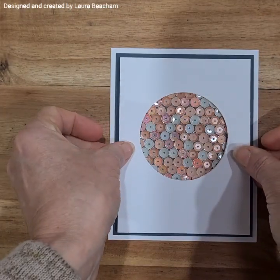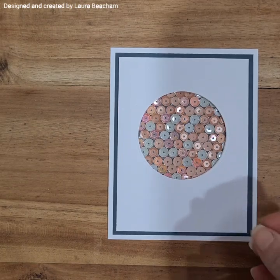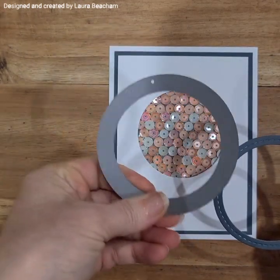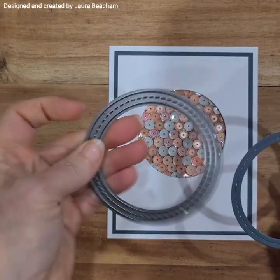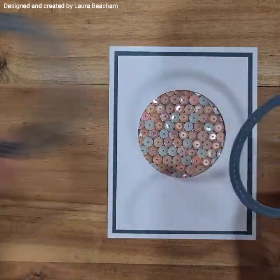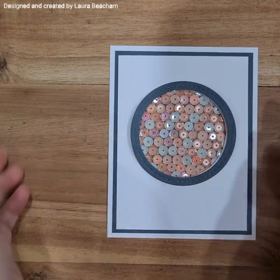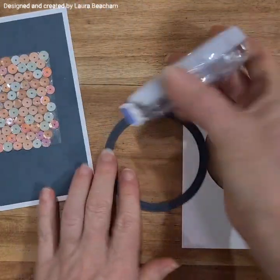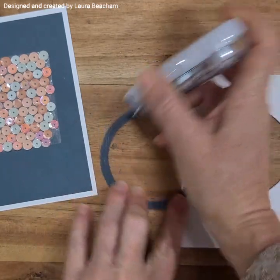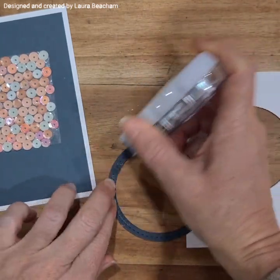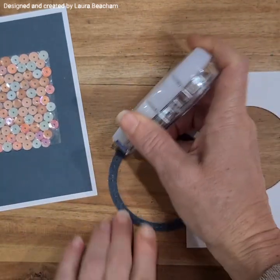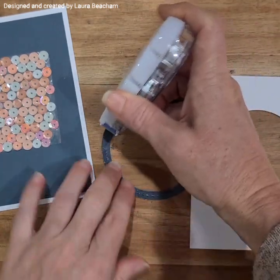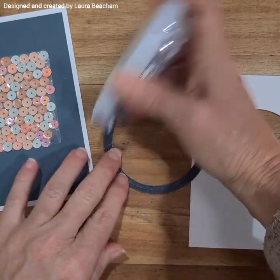Then that fits over the top. I've taken the Close To My Heart stitched frame from the shaker card, the shaker panel die cut set, so that I can give a really cool outline edging. I'm just going to quickly stick that on, and then once that's stuck on we attach that panel onto the card with some thin 3D foam tape to give it a little bit of dimension.